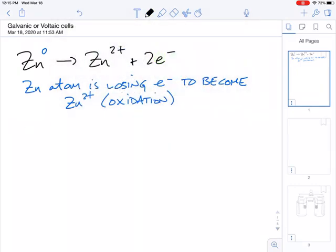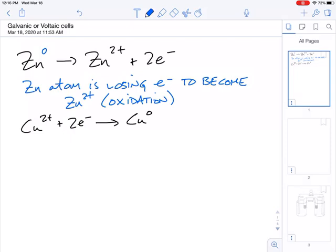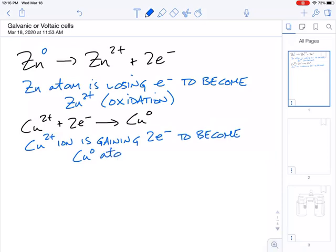It's been a little while since we studied oxidation reduction, so we'll give you some mnemonic devices to remember how to identify oxidation and reduction. If we look at another reaction, let's say we had copper 2+ ion plus 2 electrons going into copper 0.